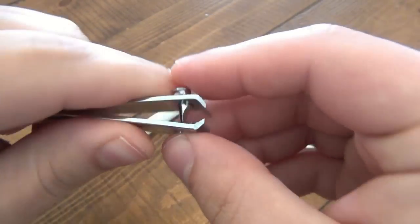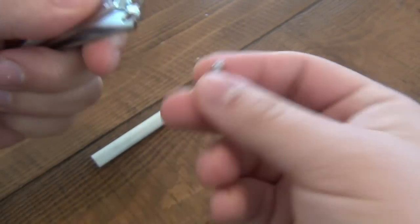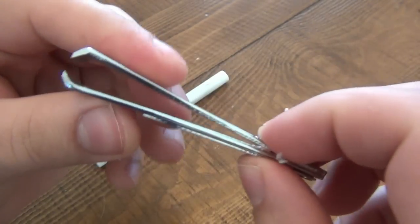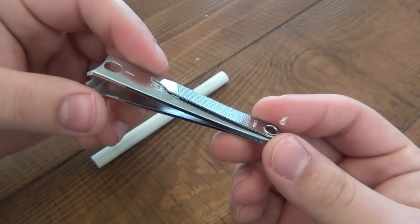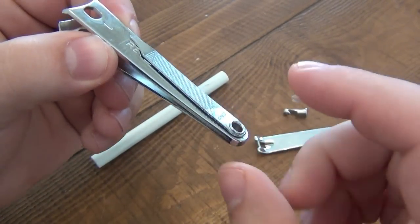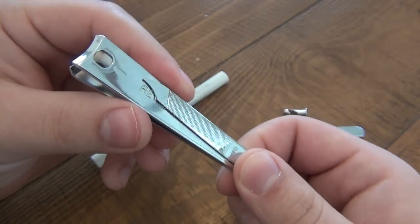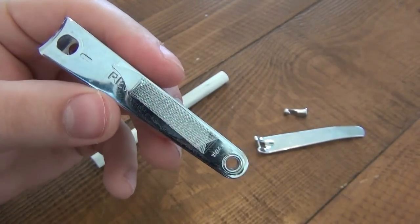So pinch the blades together - it's gonna be a little bit of tension. Face that hook outwards, take it apart, and of course when you let go, this pin's gonna fall out. So there you go.